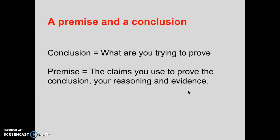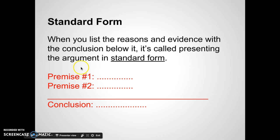This will be a question on the test. So just to solidify it more concretely: the conclusion is what you're trying to prove, and a premise is the claim you use to prove the conclusion — it's your reasoning and your evidence. When I put something in the format we've been talking about, called standard form, these are the premises, and then these are the conclusions. When you list the reasons and evidence with the conclusion below it, it's called presenting the argument in standard form. We usually use standard form with deductive arguments.